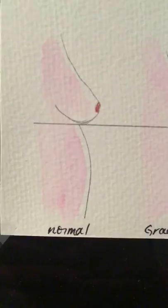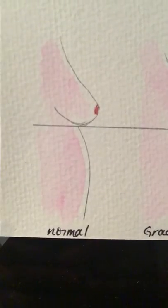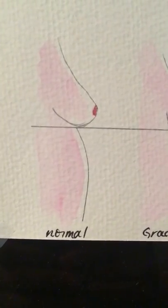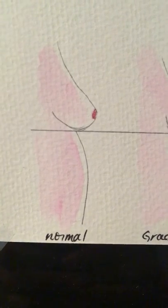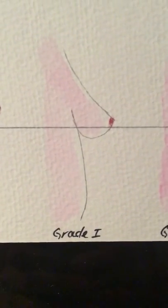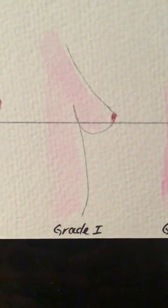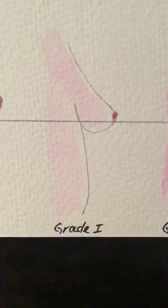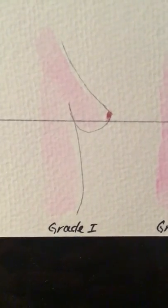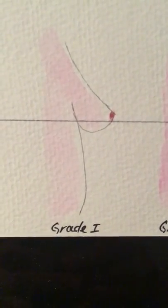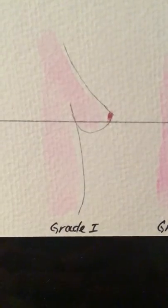In the normal stage you can see that the nipple is above that crease underneath the breast that we call the inframammary fold, and there's a nice fair amount of tissue beneath that fold. When we go over to grade one, there's been a subsequent drop in the breast tissue so the nipple is still right at or just above that fold and there is some tissue still underneath the breast.